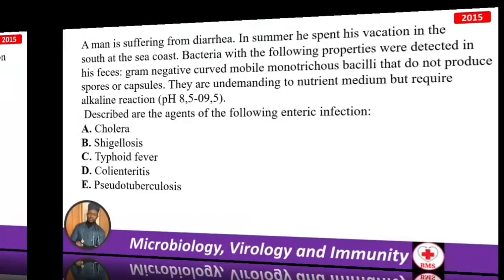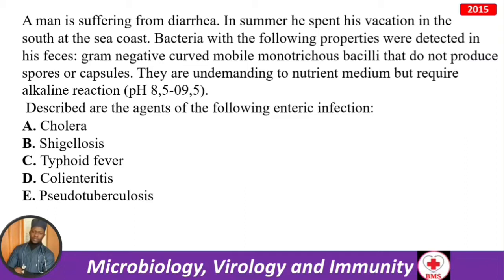A man has diarrhea after spending summer vacation at the sea coast. Bacteria detected in feces: gram-negative, curved, mobile monotrichous bacilli that do not produce spores or capsule, undemanding to nutrient medium but require alkaline medium. Alkaline medium and rice water diarrhea point toward cholera. Alkaline reaction is specifically characteristic of cholera.